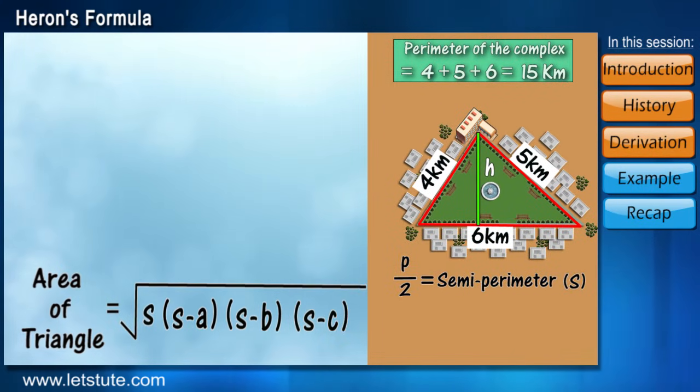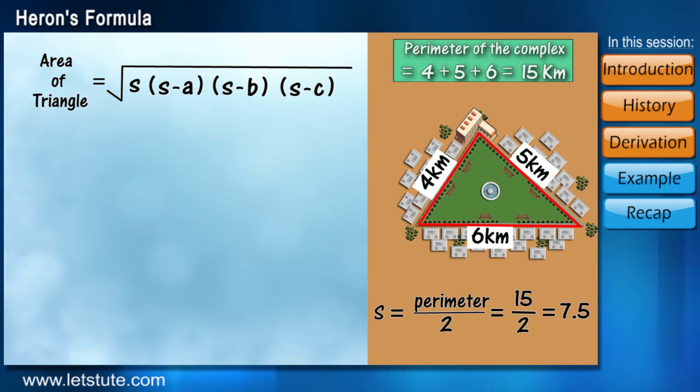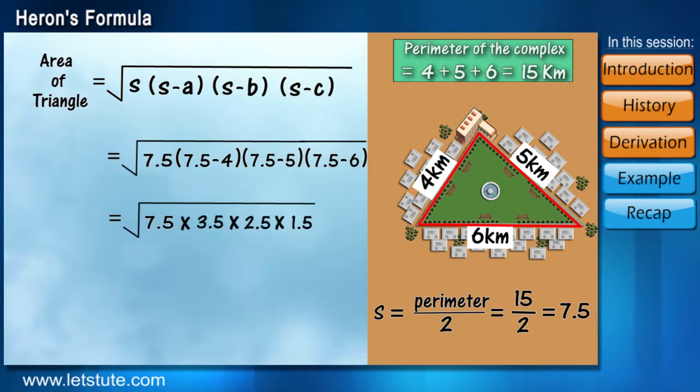So, here we do not need the value of height and now we can find the area of the complex with the sides 4, 5, and 6 kilometers. So, the area of the complex comes around 9.921 square kilometers.